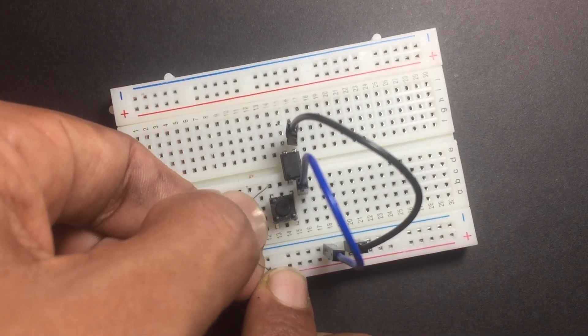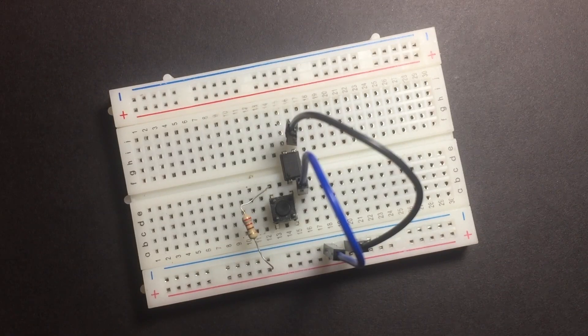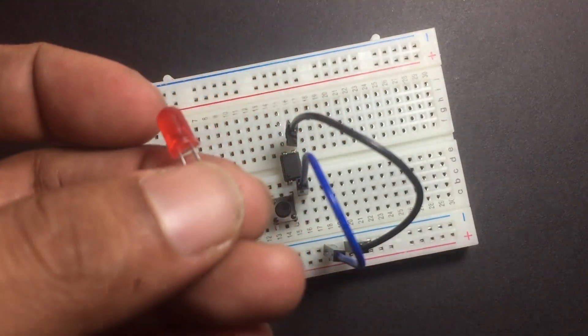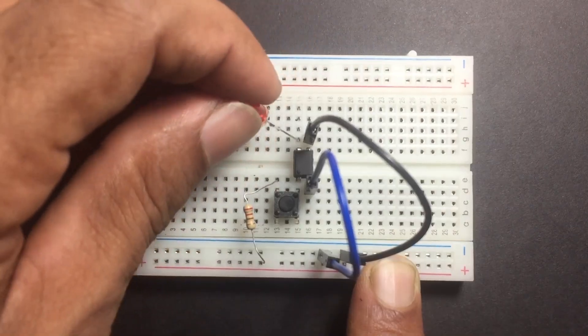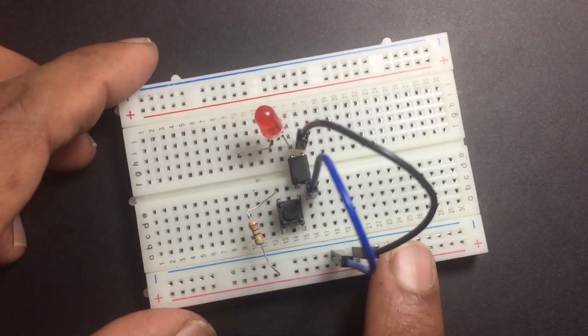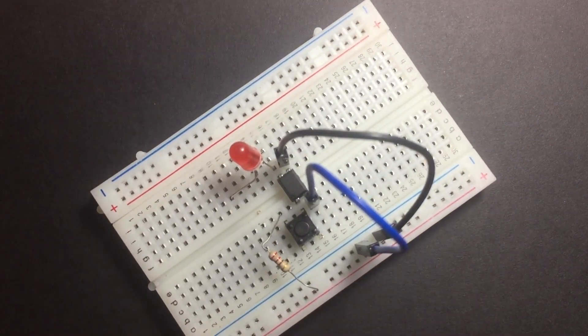Now connect 220 ohm resistor to the other pin of the switch and give 5 volts to the resistor. Connect cathode of LED to the 4th pin of the optocoupler and connect plus 5 volt to the LED through 220 ohm resistor.